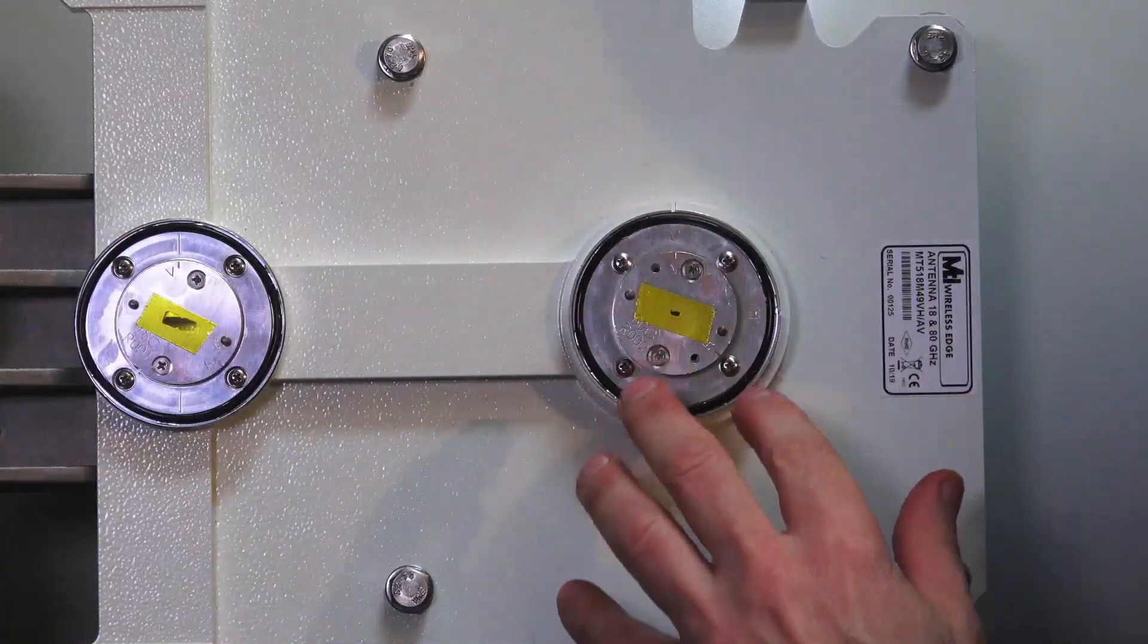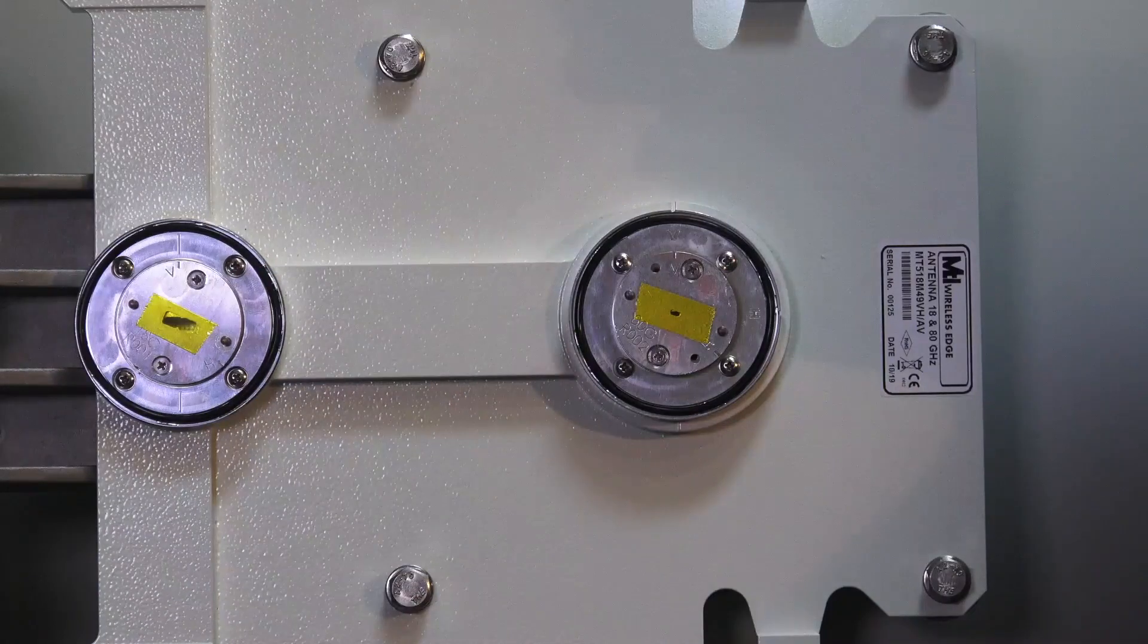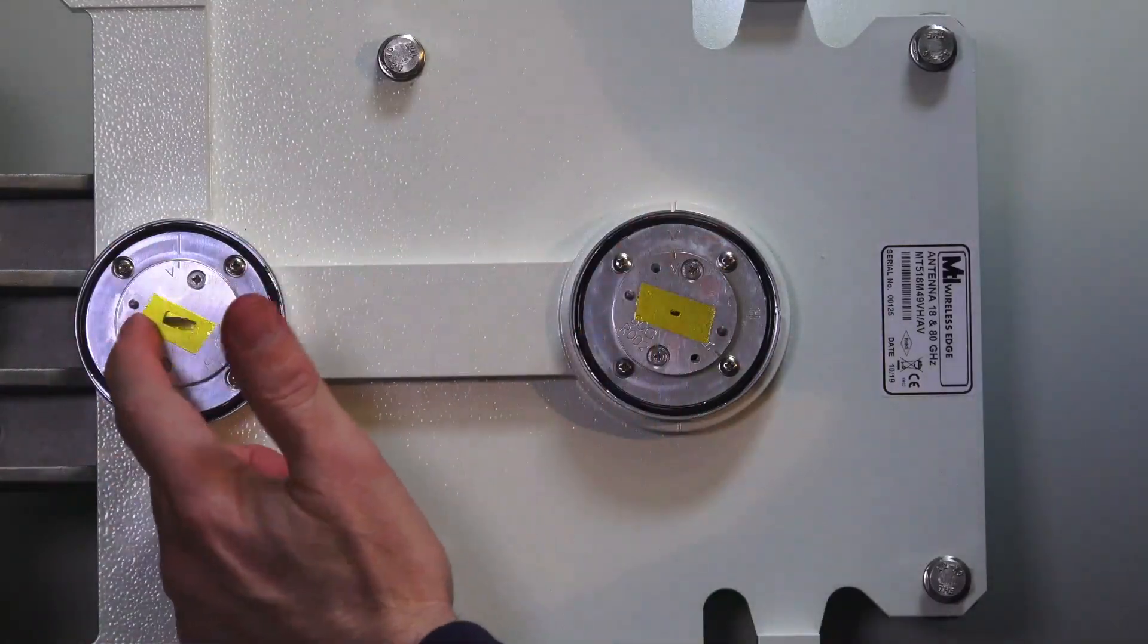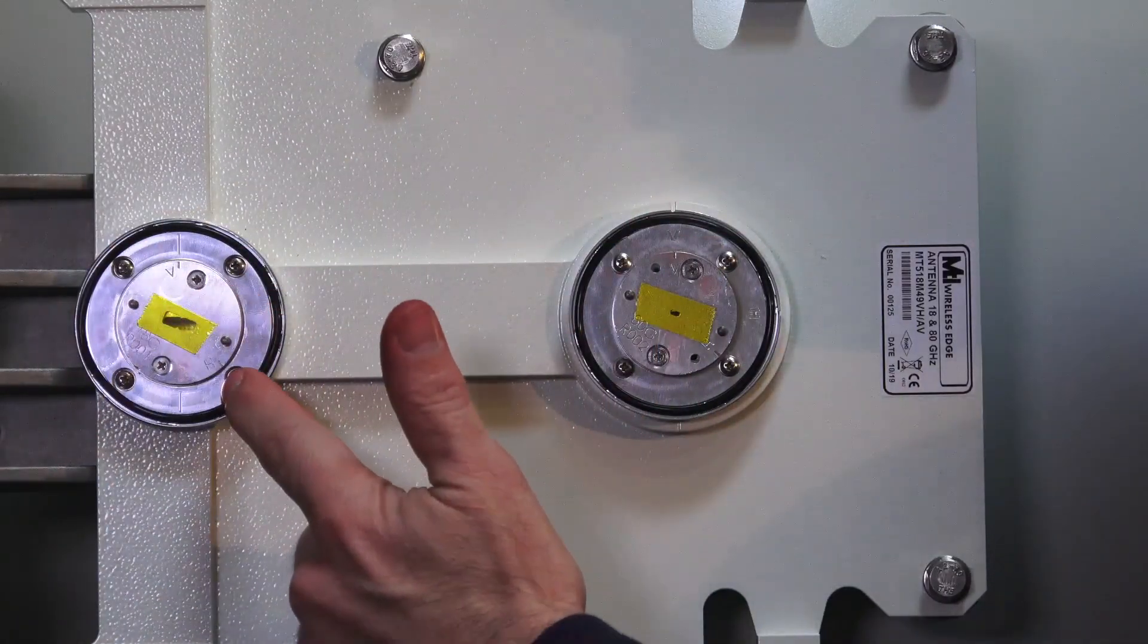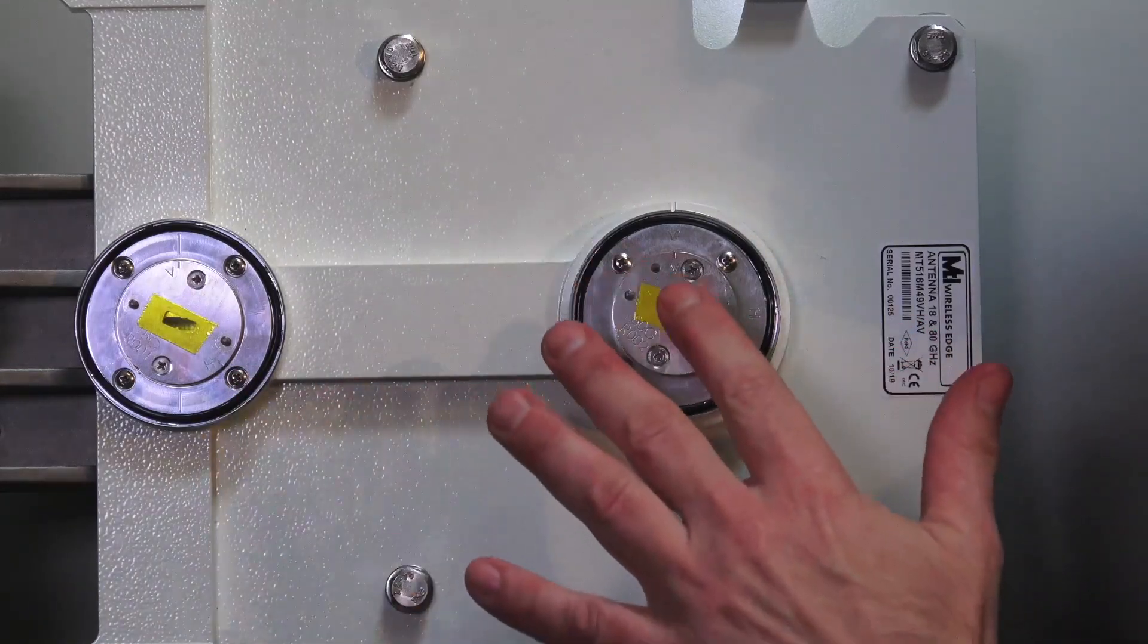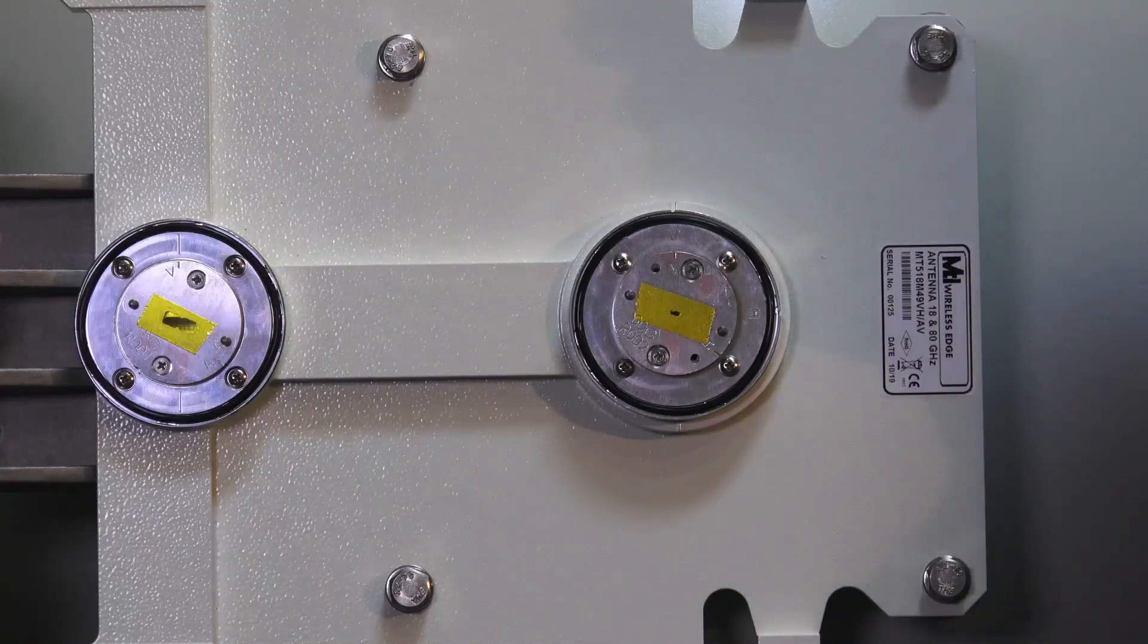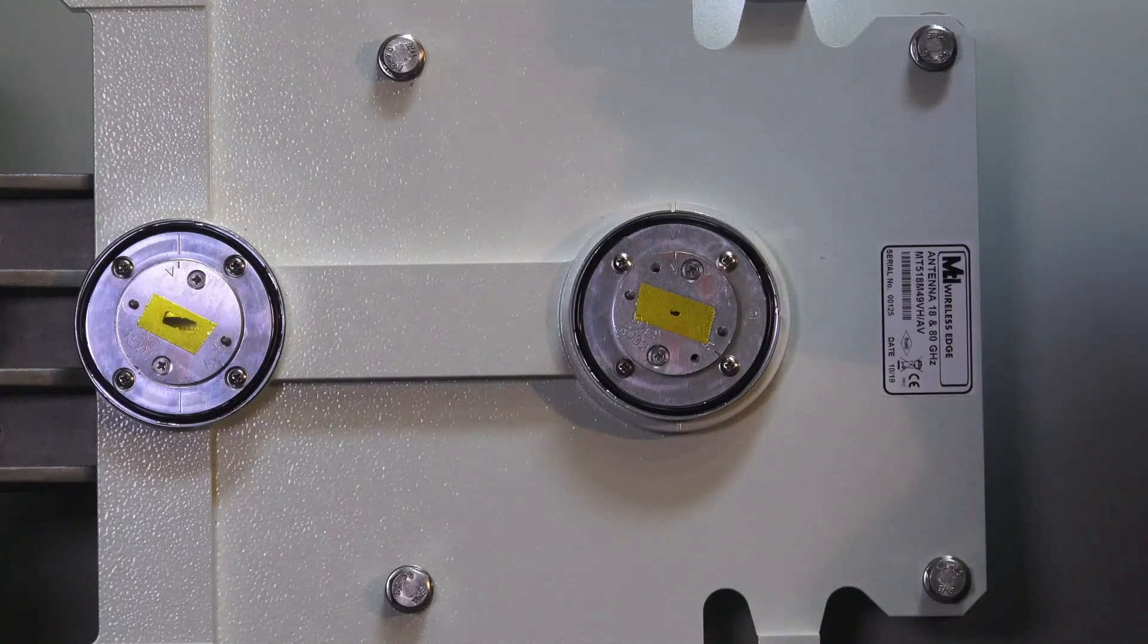Now that we've set this antenna up, both of these are set for vertical polarization. The last step before you mount the radio out of the dish is to take these little pieces of protective tape off the waveguide slots. So it's important to remove these before installing the radio on here. And that's it for setting the polarization on the new WTM 4800 series multiband antenna.